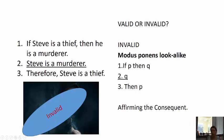Why is it invalid? It's using a modus ponens lookalike called affirming the consequent. Modus ponens affirms the antecedent: if P then Q, P, therefore Q. But this one says if P then Q, Q, therefore P — and that is actually invalid. This doesn't follow because saying all thieves are murderers does not say all murderers are thieves. So this is an invalid argument.